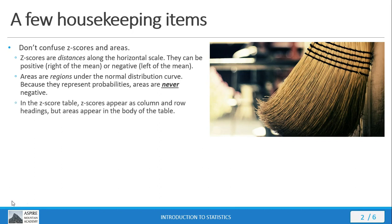In our z-score table, the z-scores appear as column and row headings, but the areas are in the body of the table itself. The headings for the columns and rows are what we use to construct the z-score, while the areas are in the body of the table. Don't get these two confused — they're very different animals, although they are related to each other.